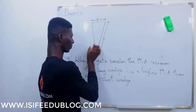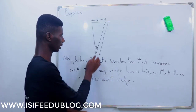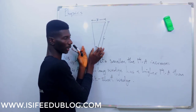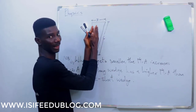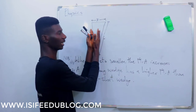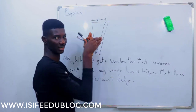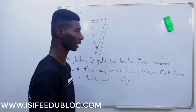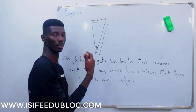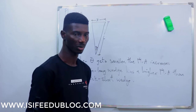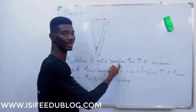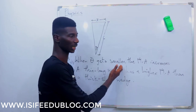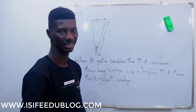Another question you may be asked is based on the angle theta. When theta becomes smaller, the wedge becomes thinner and sharper, meaning its efficiency increases and the mechanical advantage increases. So in your exam, when theta gets smaller, the mechanical advantage increases.